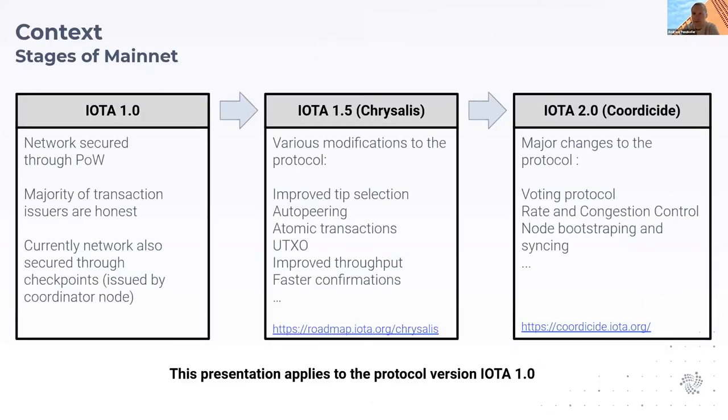The IOTA protocol is going through several stages at the moment. Version 1.0, which I'll be focusing on in this talk, has the network secured through proof of work performed by appending transactions. It requires that a majority of transaction issuers are honest.